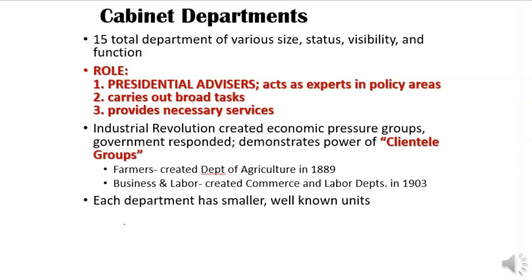The big thing is that they act as presidential advisors — they meet with the president about once a month. Some talk to the president on a daily basis, like the Department of State or Department of Defense, but somebody like the Department of Education is pretty much on their own. There are four cabinet departments that serve clientele groups: farmers represented by Agriculture, business by Commerce, labor by the Labor Department, and veterans by Veterans Affairs.